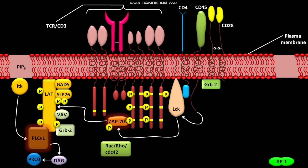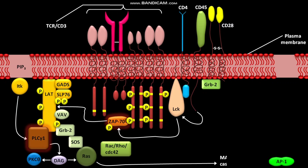Phosphorylated LAT also associates with the SH2 domain of GRB2. GRB2 constitutively binds to SOS, a GEF or guanine nucleotide exchange factor. SOS then facilitates activation of the RAS pathway. DAG also induces RAS, and RAS induces the MAP kinase cascade, ultimately leading to activation of the transcription factor AP1.